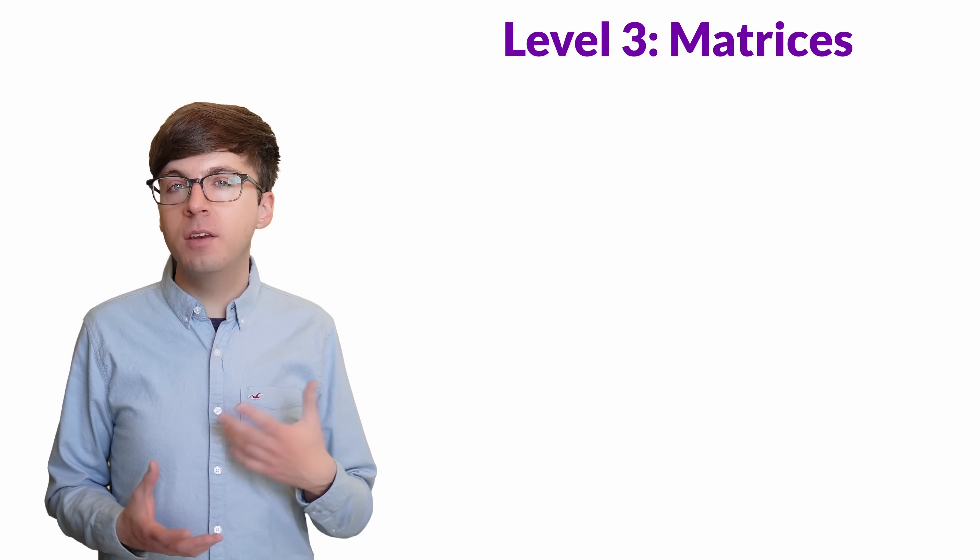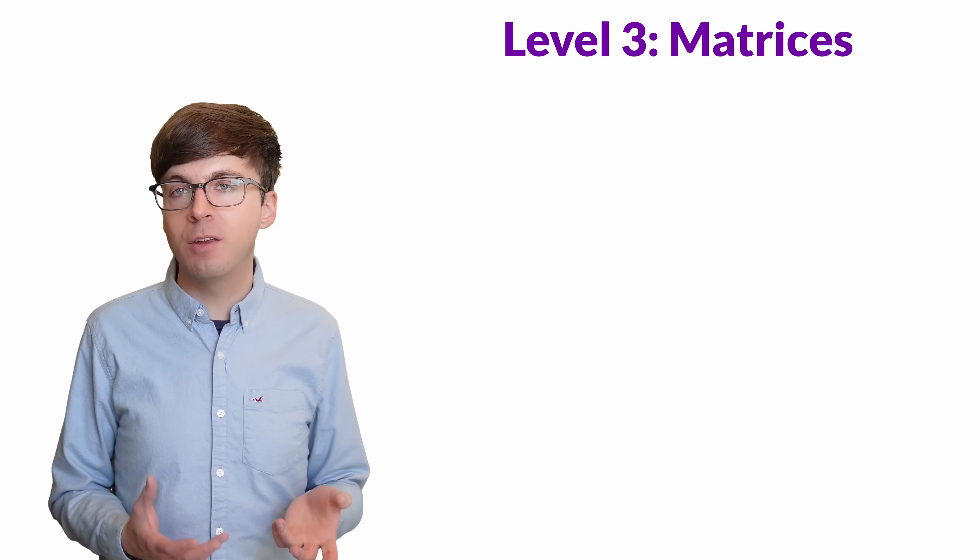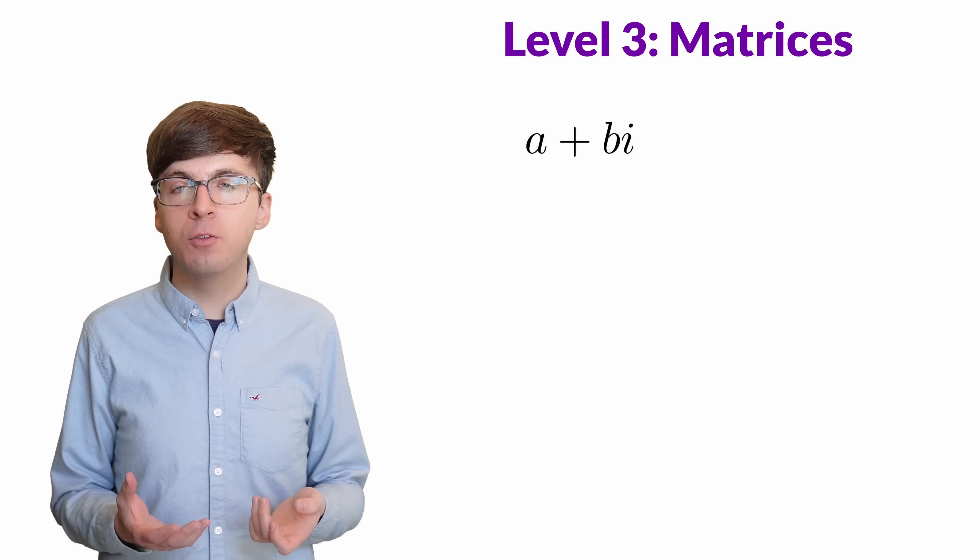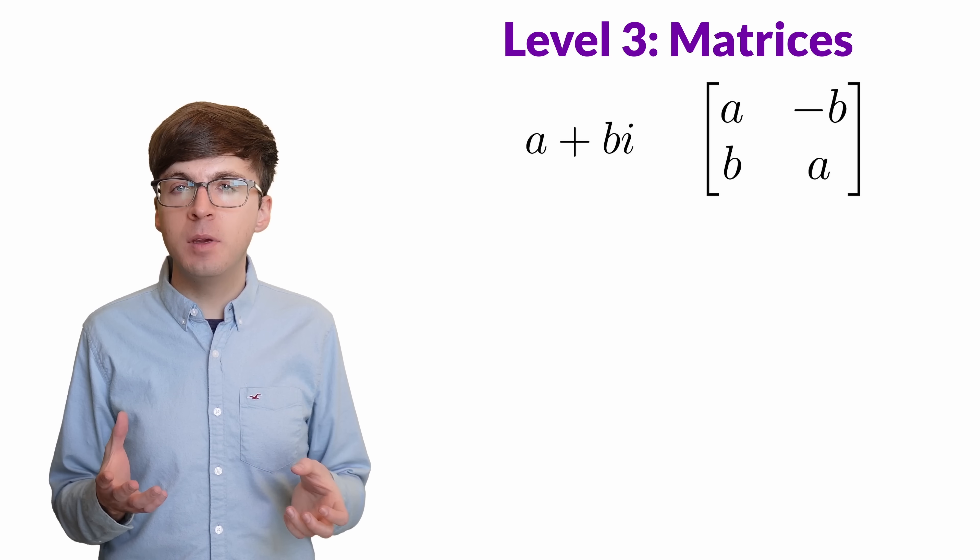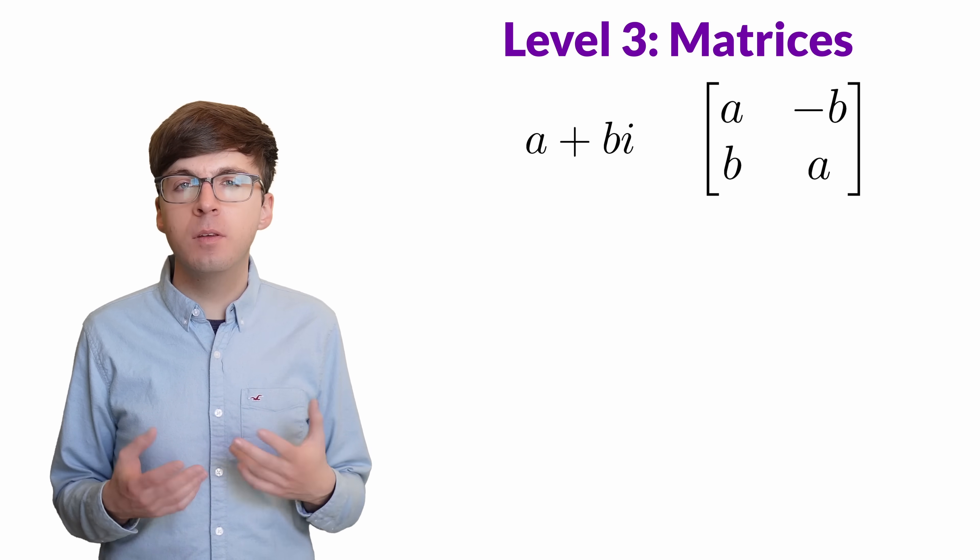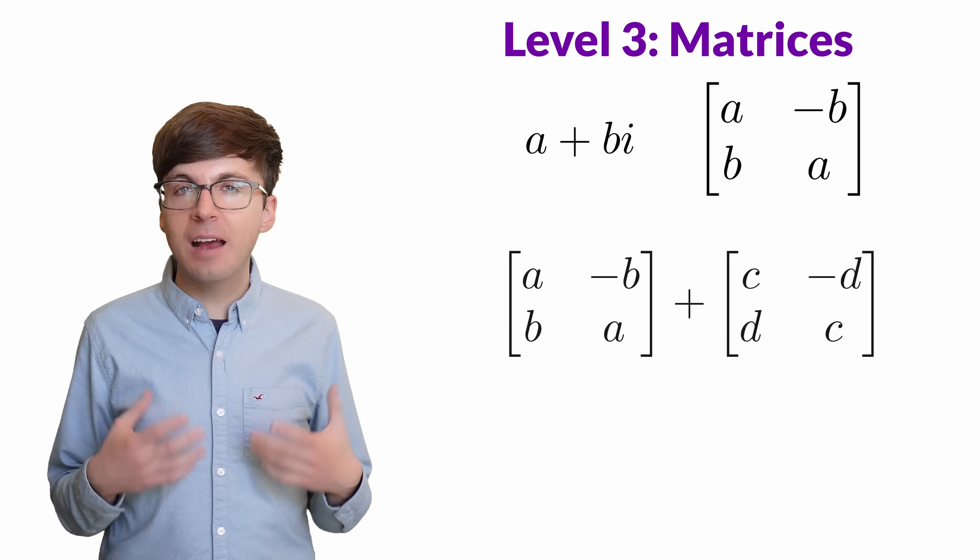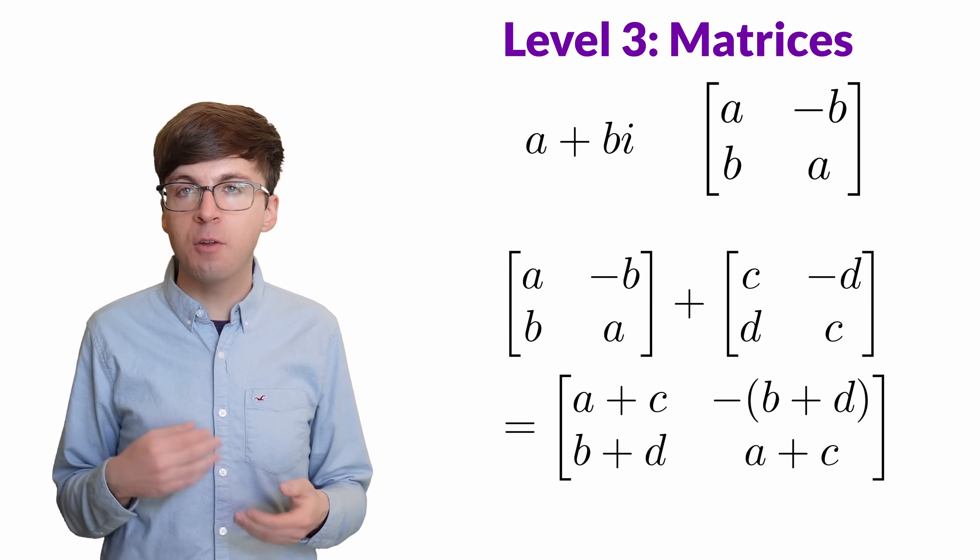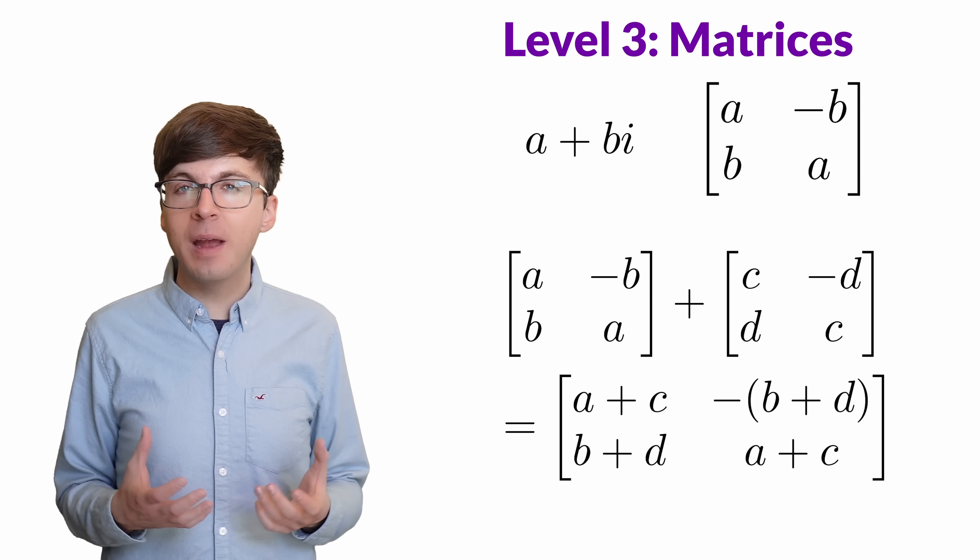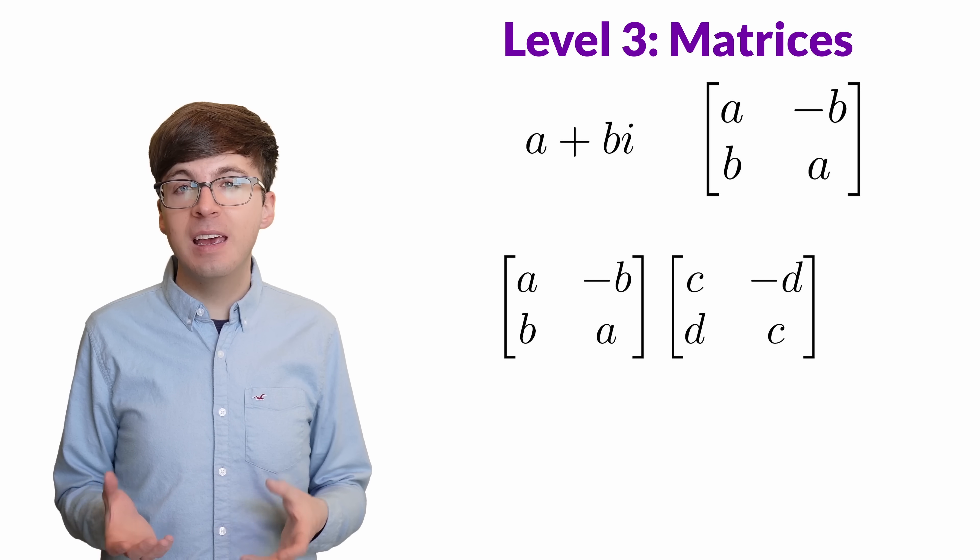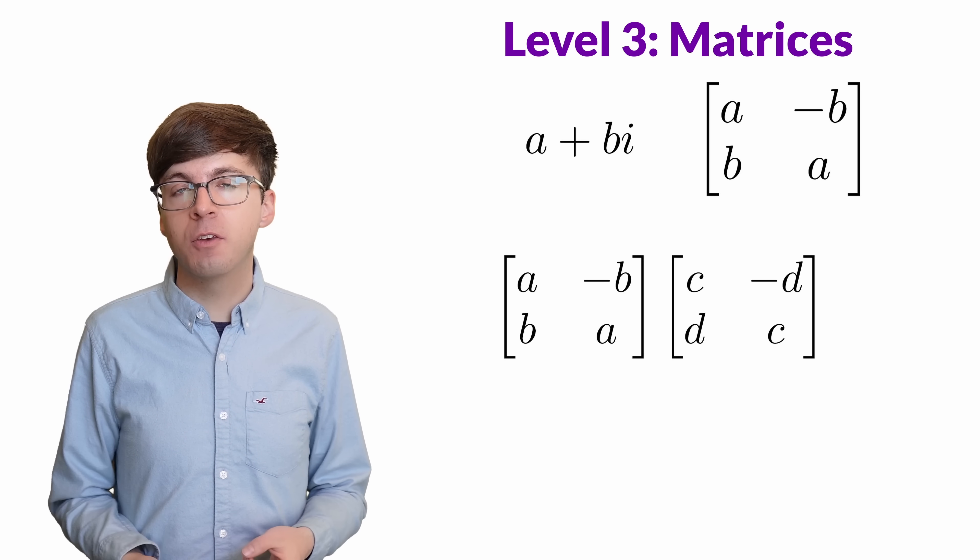For level 3, let's see how we can define complex numbers as matrices. Let's write the number a plus bi as the 2 by 2 matrix, a negative b, b, a. A and B are both real, so this is a matrix of real numbers. To add or subtract complex numbers, we can just add or subtract the matrices entry by entry. But the real magic is that the strange looking formula for multiplying complex numbers is exactly how matrix multiplication works.